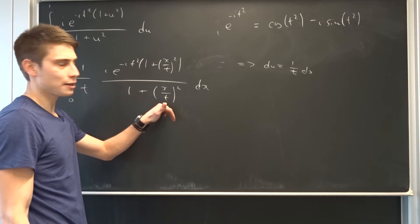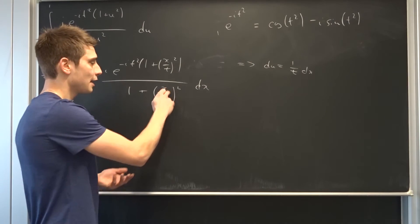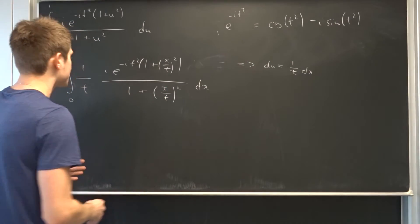And here in the denominator, this is x over t, and t approaches infinity, so that's x over infinity. It just vanishes. This is just 0.